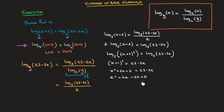We're now faced with this quadratic equation. We could solve it using the quadratic formula, but we can also solve it by factoring — and that's what I'll do. In factored form, this is (x plus 6)(x minus 2) equals 0. This leads to two possible solutions: either x plus 6 equals 0, giving x equals negative 6, or x minus 2 equals 0, giving x equals 2.